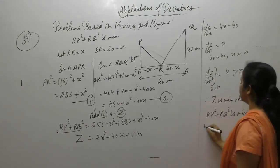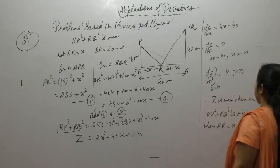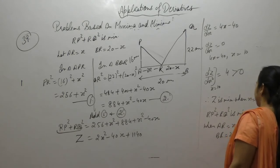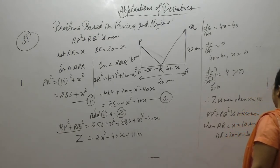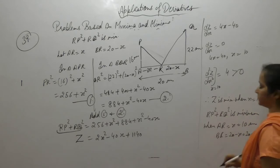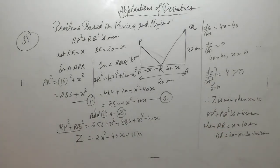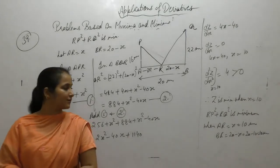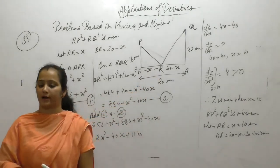Take the first derivative: dZ/dx equals 4x minus 40. Put first derivative equal to zero, so x equals 10. The second derivative is 4, which is greater than zero when x equals 10 since there is no term of x. So Z is minimum when x equals 10, meaning RP² plus RQ² is minimum when AR equals 10 meters and BR equals 20 minus 10 equals 10 meters.